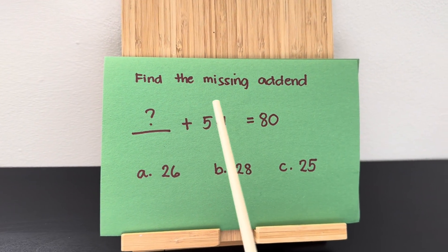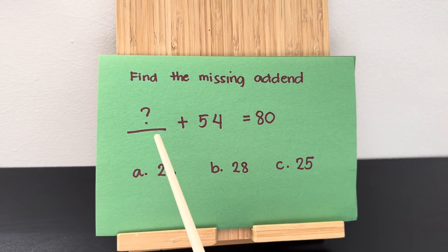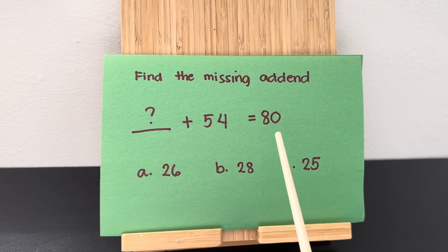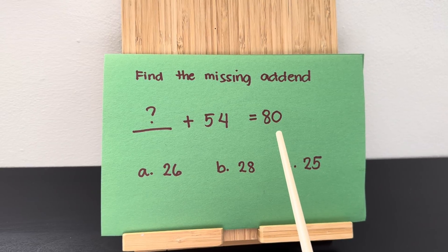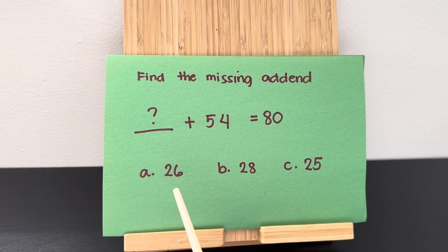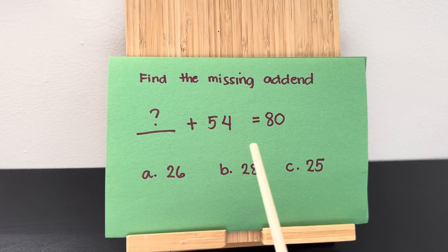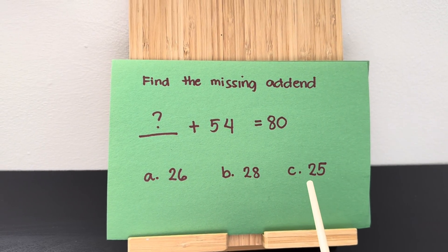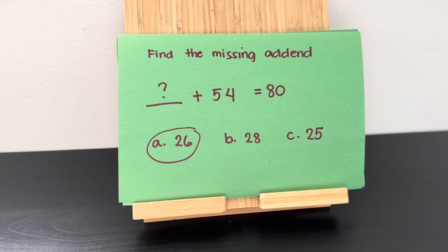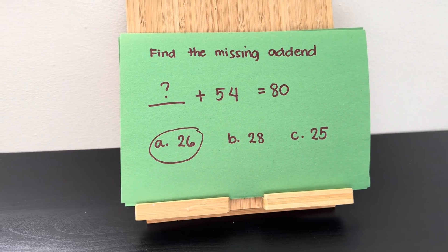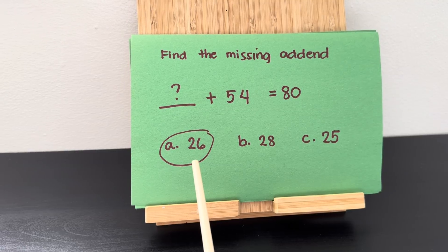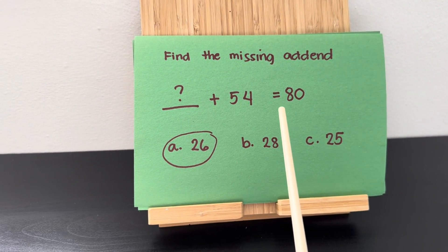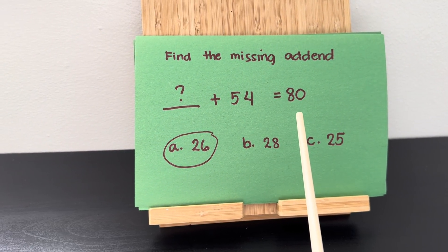Let's find the missing addend. Blank plus 54 is equals to 80. Is it letter A, 26? Letter B, 28? Or is it letter C, 25? And the correct answer is 26. 26 plus 54 is equals to 80.